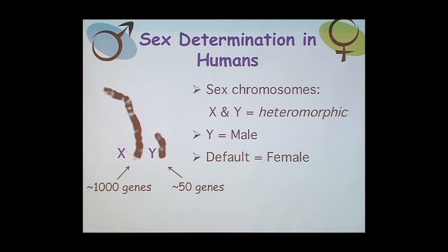The X chromosome and the Y chromosome are quite different. There are about 1,000 genes on the X chromosome and only about 50 genes on the Y chromosome.